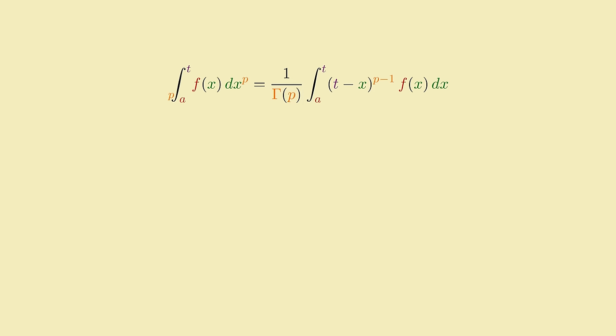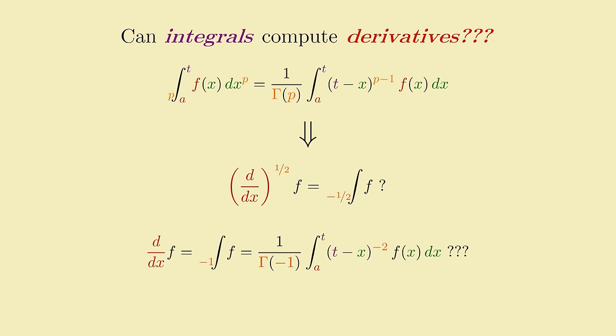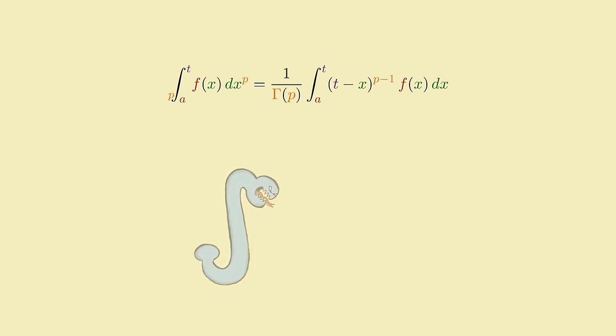Since this formula computes the p-th order integral of a function, and since derivatives can be thought of as inverse integrals, perhaps we can define a fractional derivative by plugging in negative values for the order p, thus defining a half-derivative as being a sort of negative-half integral. Or heck, since we have gamma to free us from the constraints of the regular factorial, could we compute a regular whole derivative as the negative-first integral? Can we ironically use integrals to compute derivatives? Well, not quite.